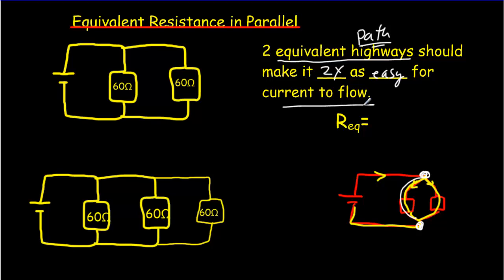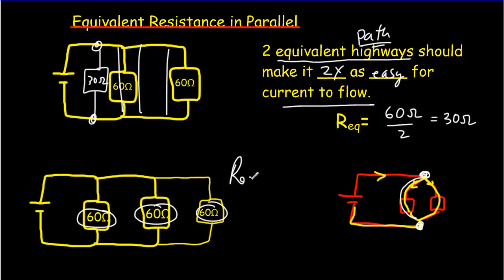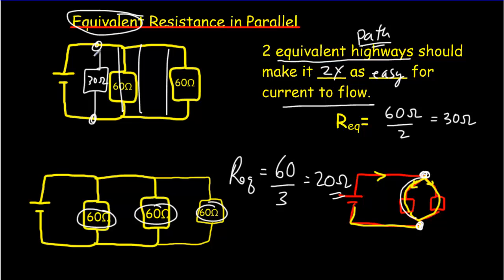That means our resistance should be half as much — 60 ohms divided by two, or 30 ohms. We could replace these two resistors by a single 30-ohm resistor and work out what the current is going to be. And it's not any harder if you've got three equivalent paths — of course it should be 60 divided by three, three times as easy for the current to flow. But this only works when we have equivalent resistances — equivalent paths.